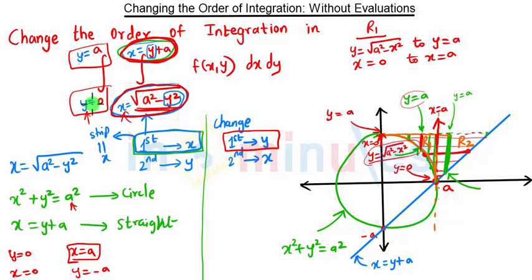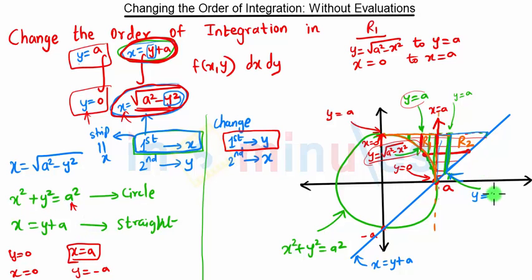Now we will do the same thing for region R2. In region R2, the lower end of the strip is on the line x equal to y plus a, so y will be x minus a. The upper end of this strip is on the line y equal to a.